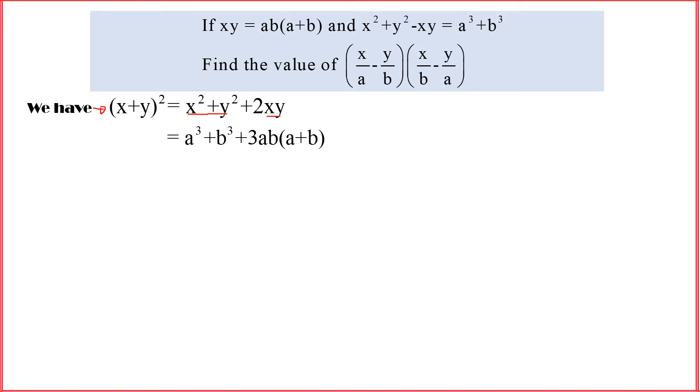Since x² + y² equals a³ + b³, I would take this to the other side, so I get x² + y² over there with plus sign. So when I add it with the other 2xy, I get 3xy.